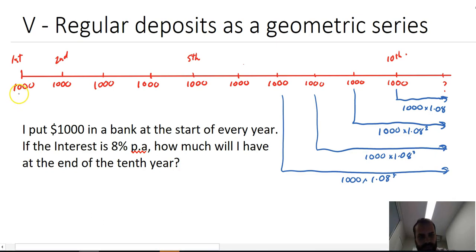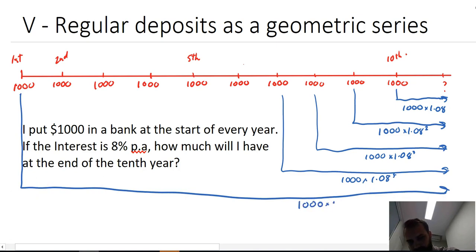All the way up to, this one's going to be $1,000 times 1.08, and you need to be a bit careful here. So this one is like the last term to the power of one, the second last term to the power of two. It's actually the first term to the power of one. This is the tenth term, so it's going to be to the power of ten.